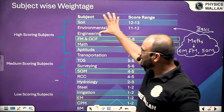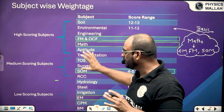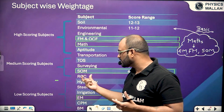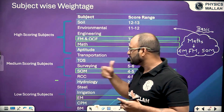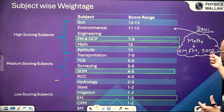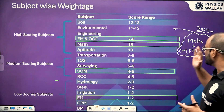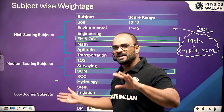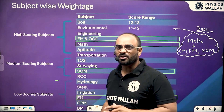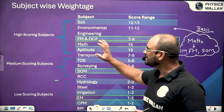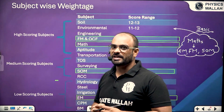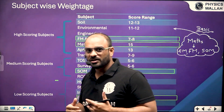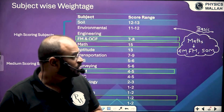Then after covering the high scoring subject, try to go with the medium scoring subjects — theory of structure, RCC, and surveying — in which we will use the concept of FM, sometimes engineering mechanics, and maths as well. Then the low scoring subject category can be covered in the later part of your preparation journey. This is the subject-wise weightage and my suggestion for your preparation.